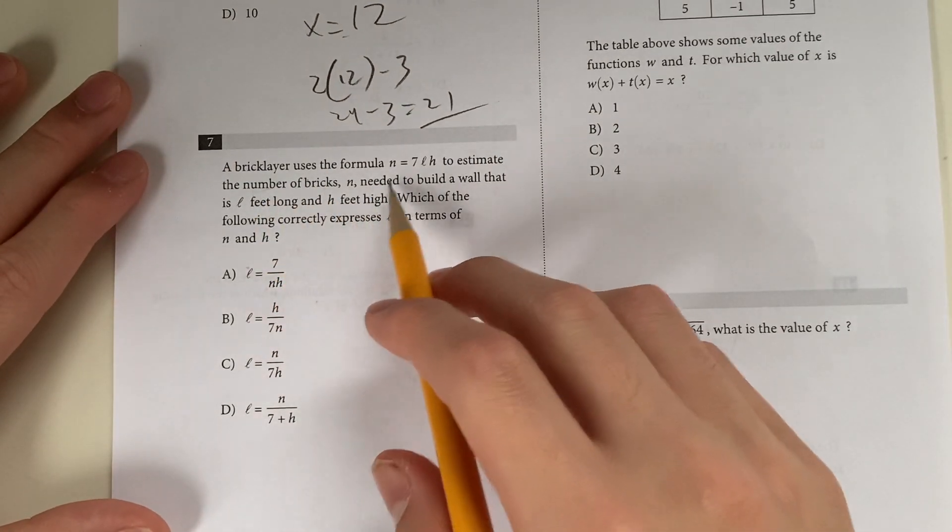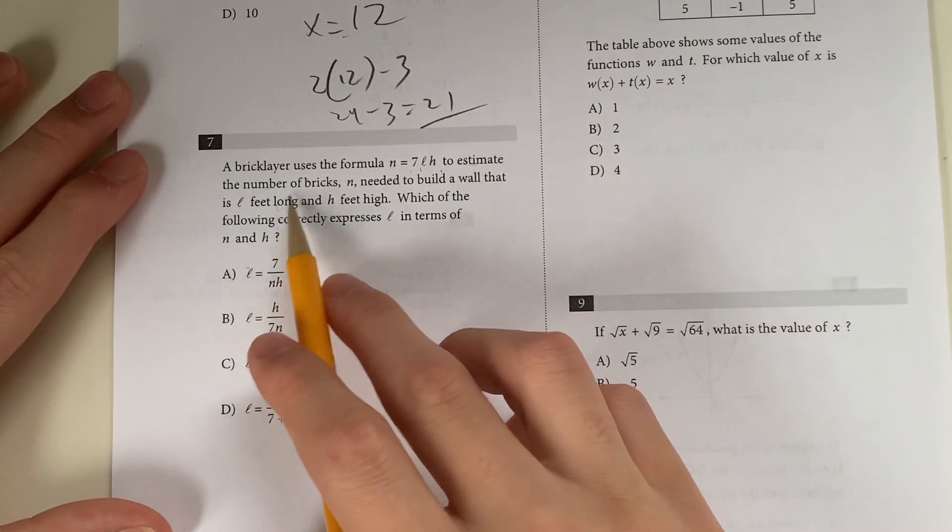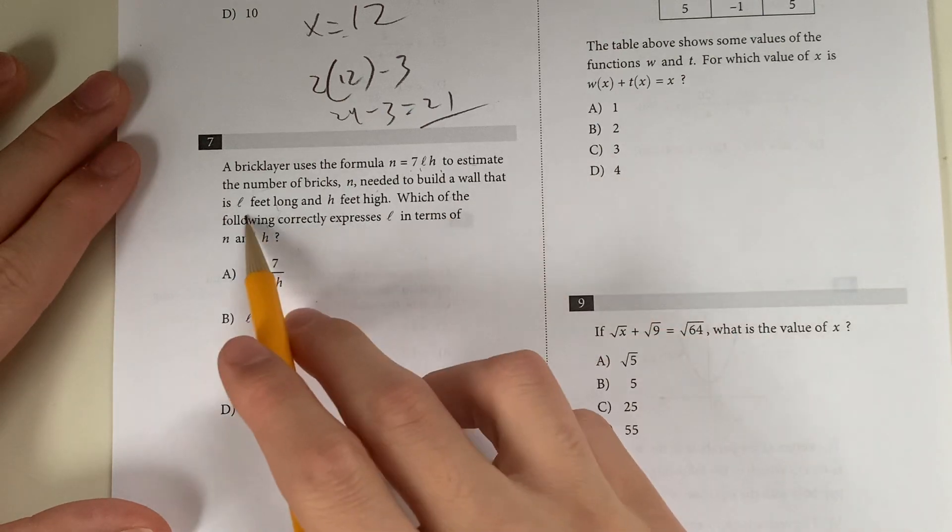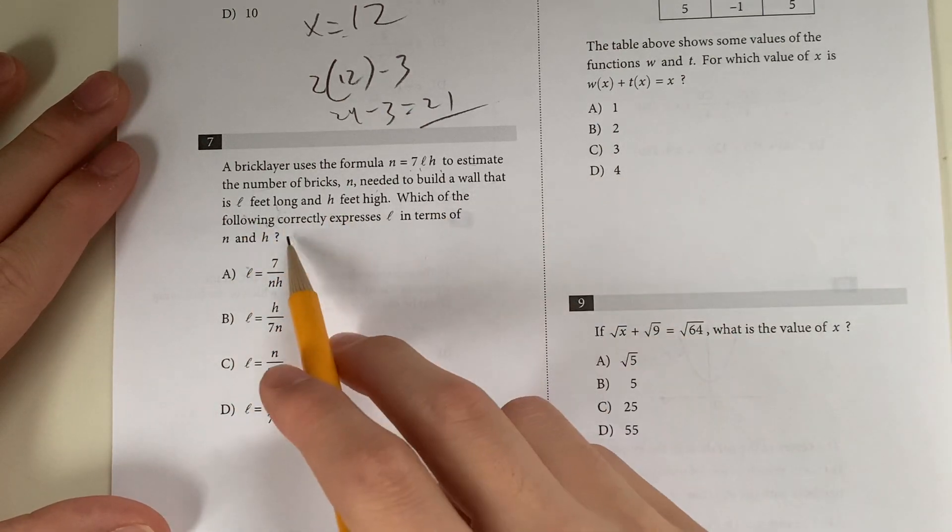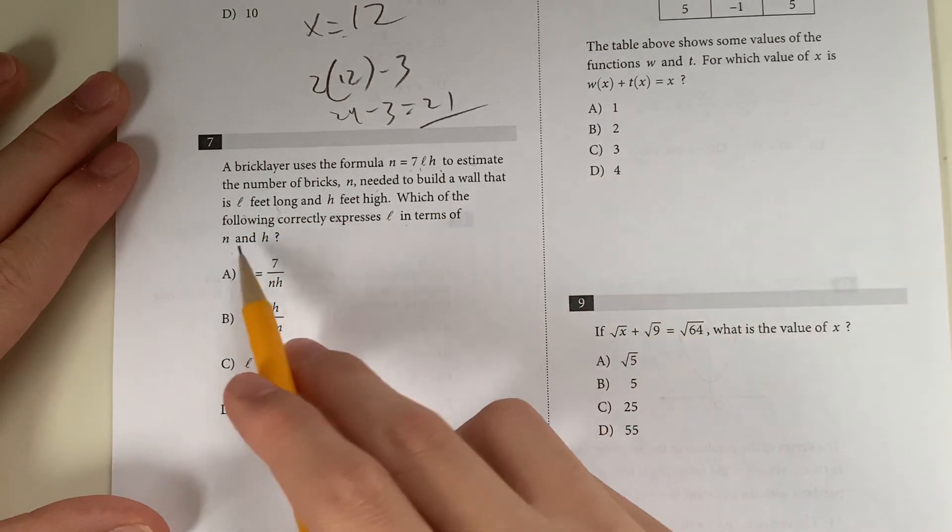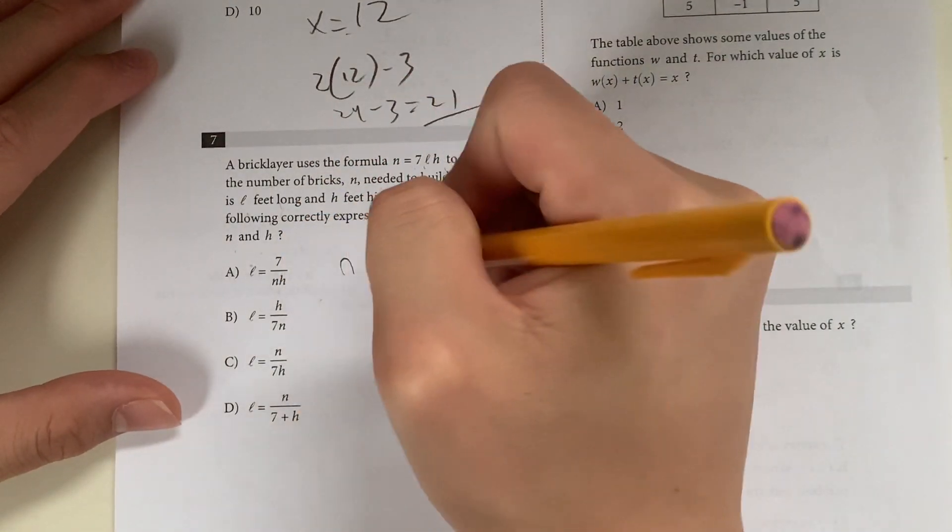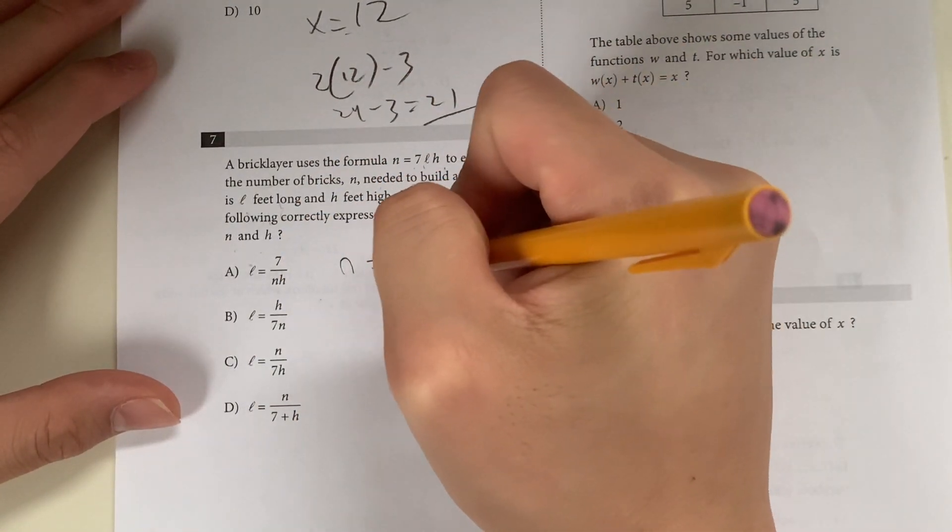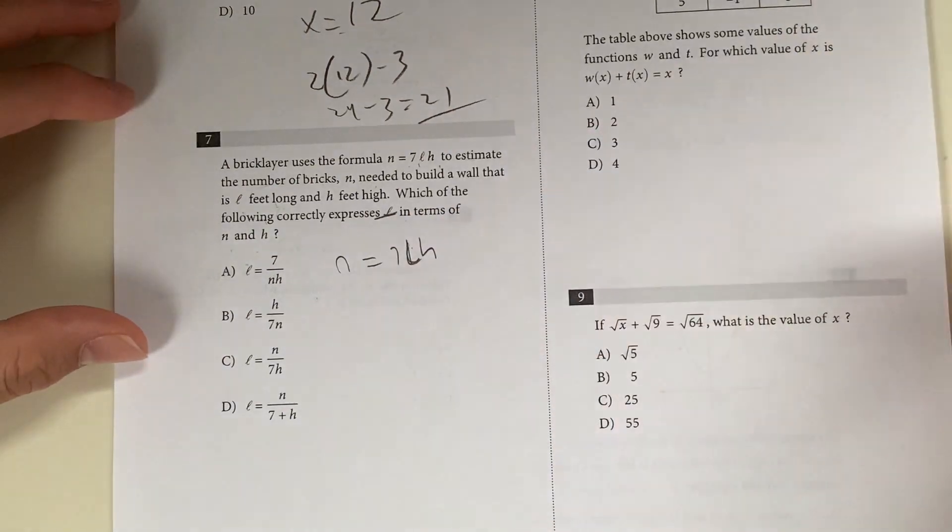Question 7. A bricklayer uses the formula n equals 7LH to estimate the number of bricks needed to build a wall that is L feet long and H feet high. Which of the following correctly expresses L in terms of N and H? We have n equals 7LH and we have to isolate L.